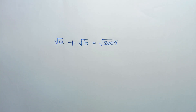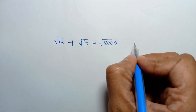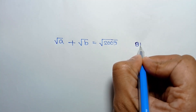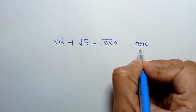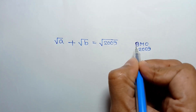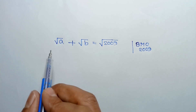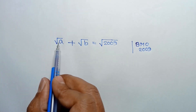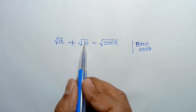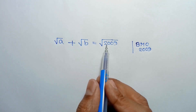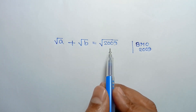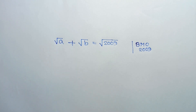Hi everyone. In this video I am going to solve a math olympiad question which appeared in the British Math Olympiad in 2009. This question states: find all solutions for square root of a plus square root of b is equal to square root of 2009, for integer values.